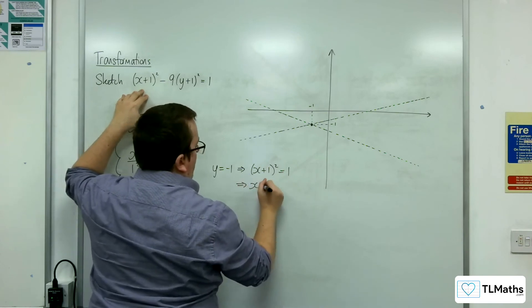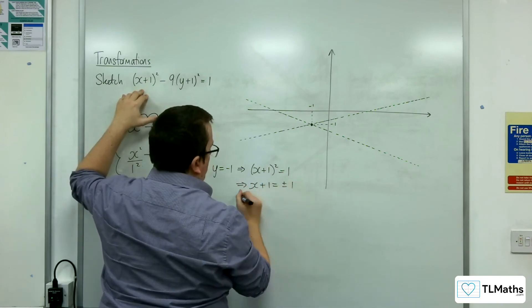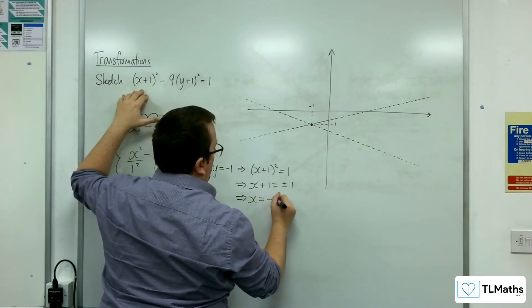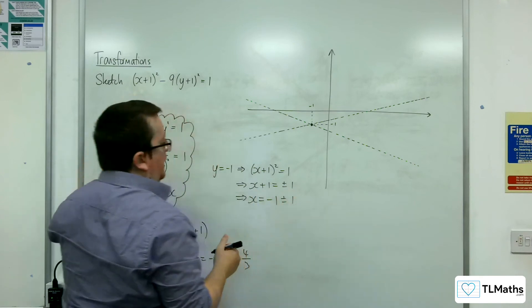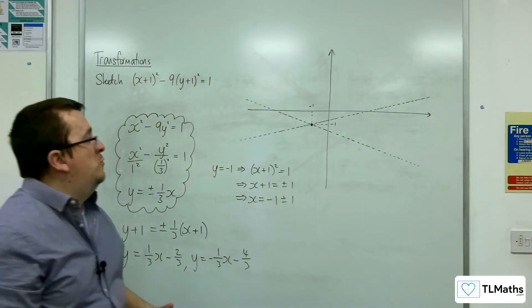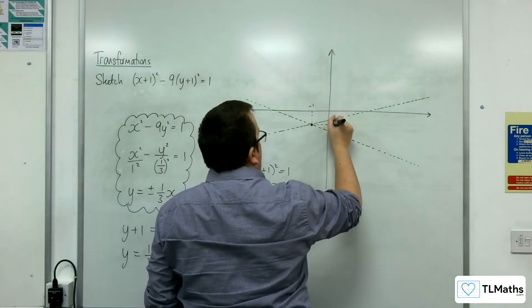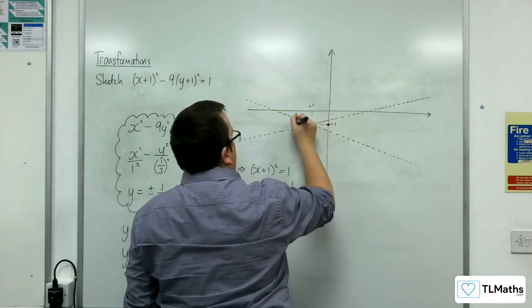So that implies that x+1 is equal to ±1. So that would be at -2 and 0.